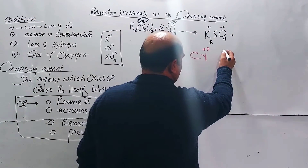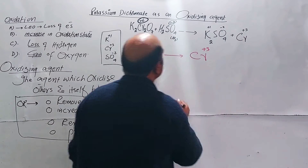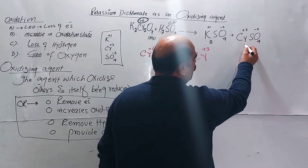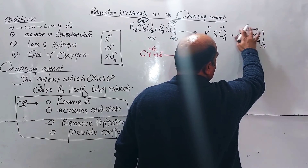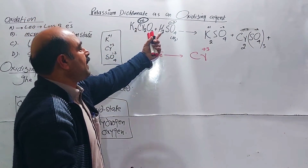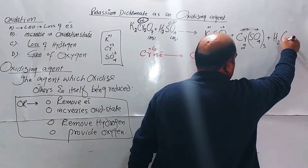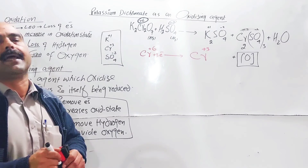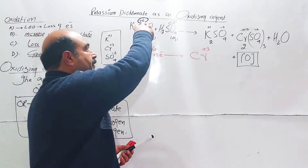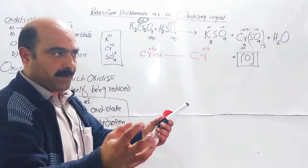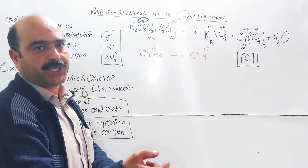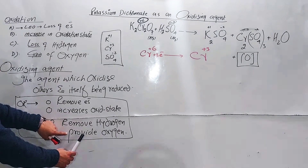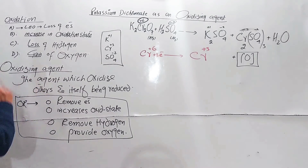Chromium ions are charged plus three, and sulfate ions minus two — giving chromium sulfate. Oxygen and hydrogen are involved, producing water H2O. This is the production of nascent atomic oxygen in the acidified medium. In the potassium dichromate and sulfuric acid reaction, atomic oxygen is produced, which is more reactive. Potassium dichromate is the oxygen provider. The agent which provides oxygen to others is called the oxidizing agent.